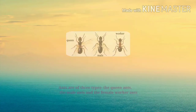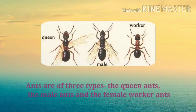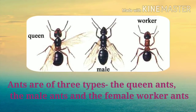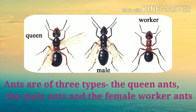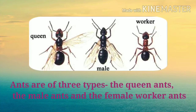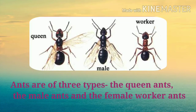Ants are of three types: the queen ants, the male ants, and the female worker ants. The queen ant is an adult female and head of all ants. Male ants have wings but they have a short span of life. The worker ants are wingless ones who collect food and protect and clean the nest.